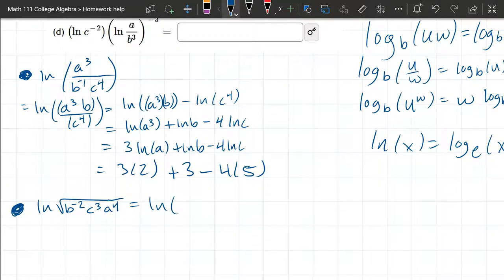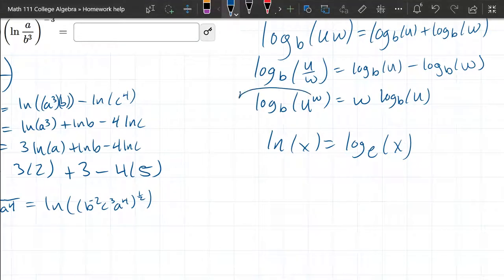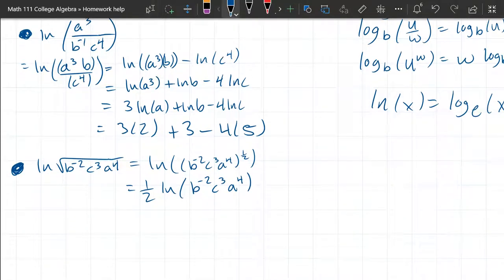So let's write it as half power. And now we're going to use the exponent property. It says we're going to bring the exponent out front as a coefficient. And now we have a triple product. We have B to the negative 2 times C cubed times A to the 4th. And products inside are sums outside.